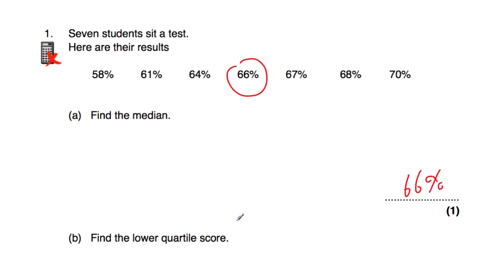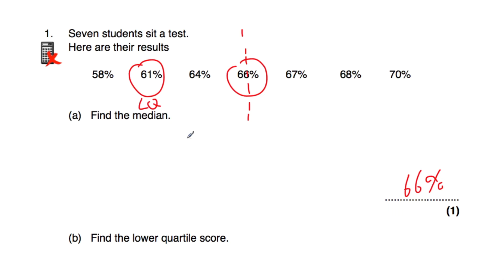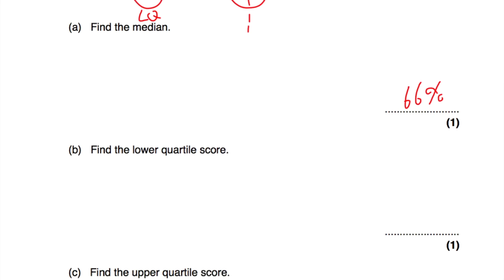Part B says find the lower quartile score. Finding the lower quartile — that's a quarter of the way through the data. There's the median. We're going to look at the bottom 50% of the data and find the middle of that. This approach is what I would use for GCSE questions — slightly different for A-level questions. So part B: the lower quartile score is 61%.